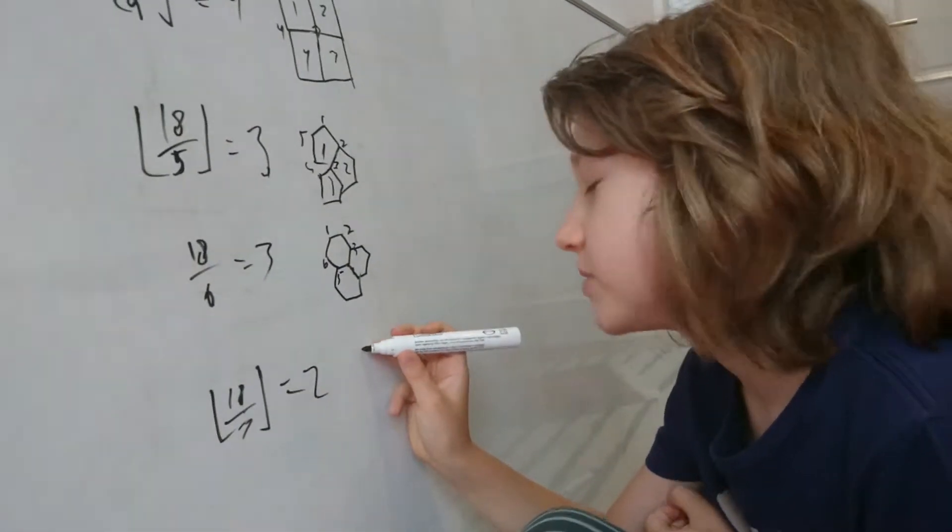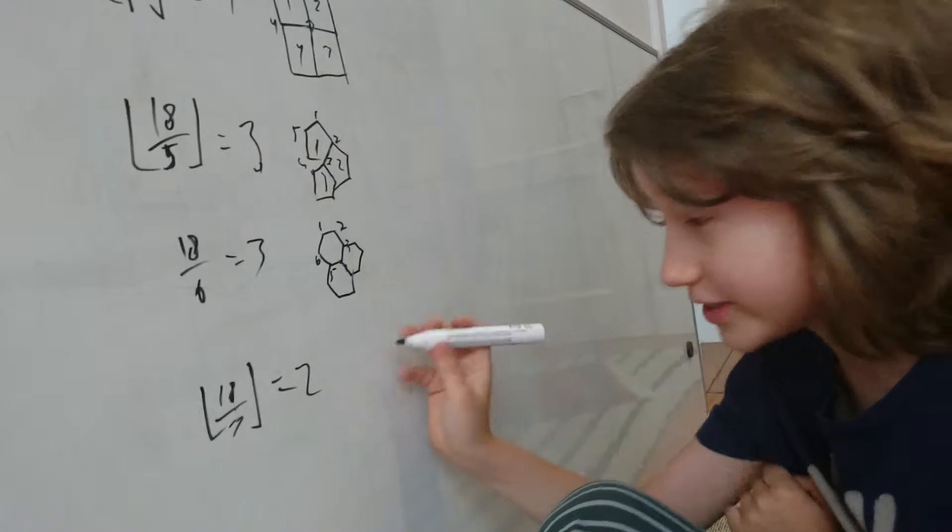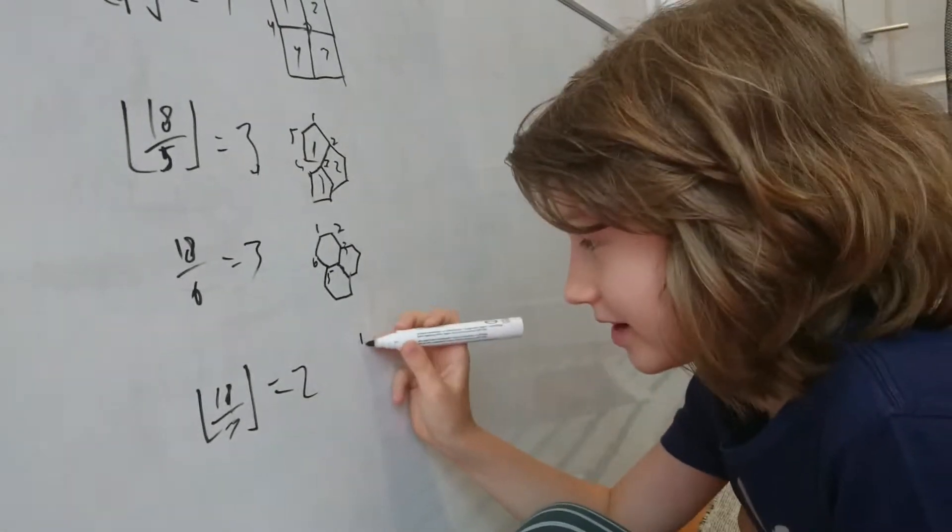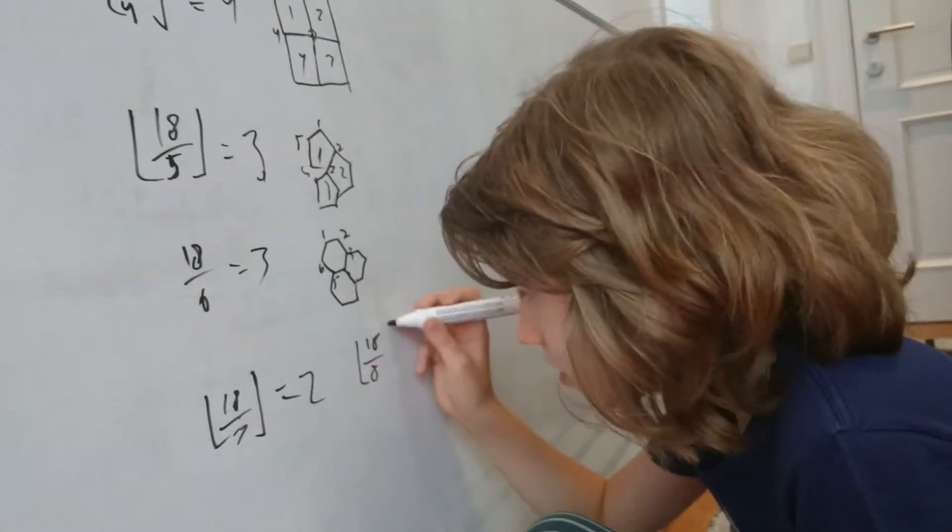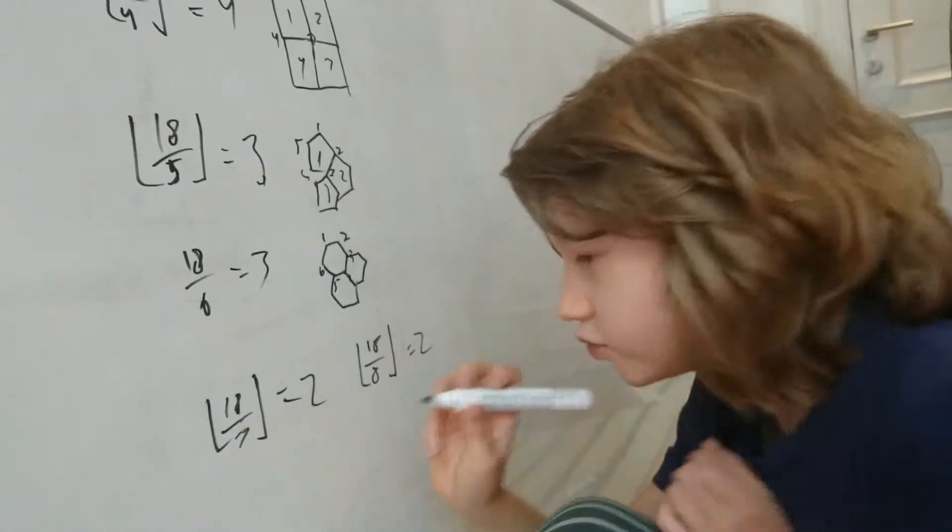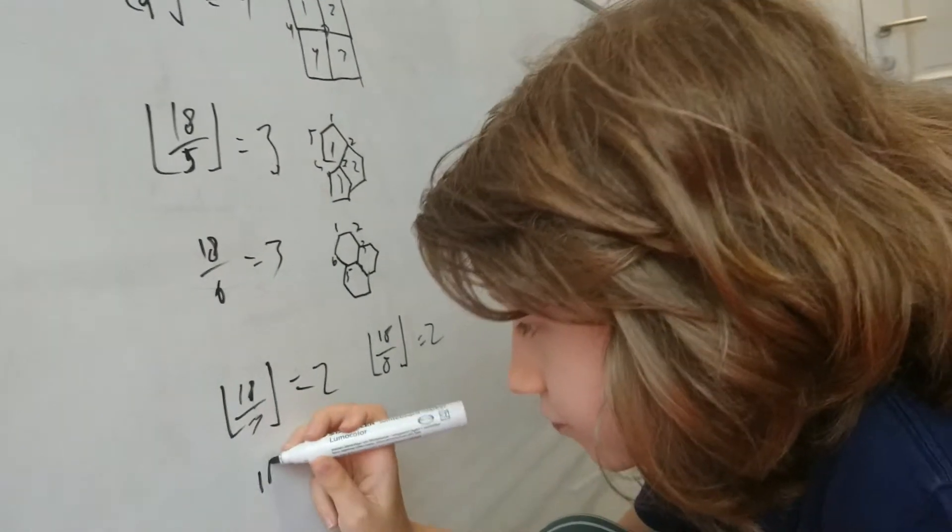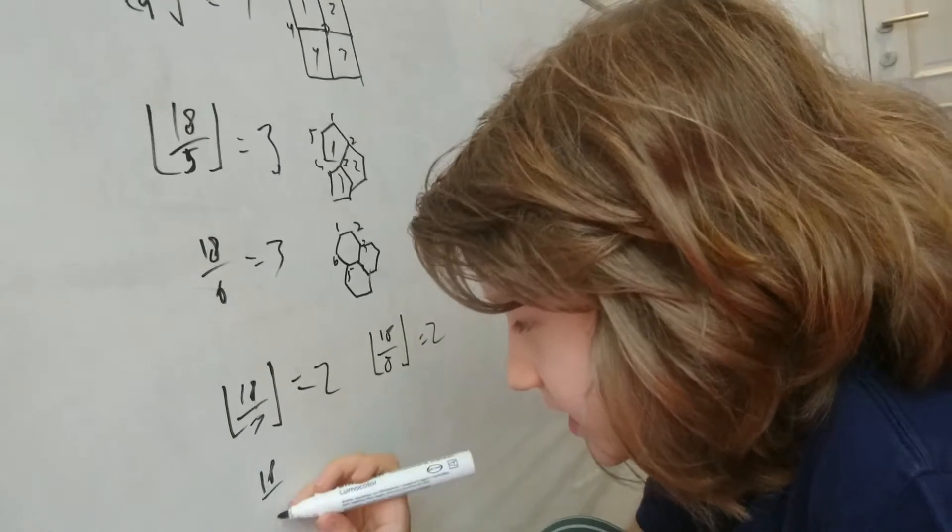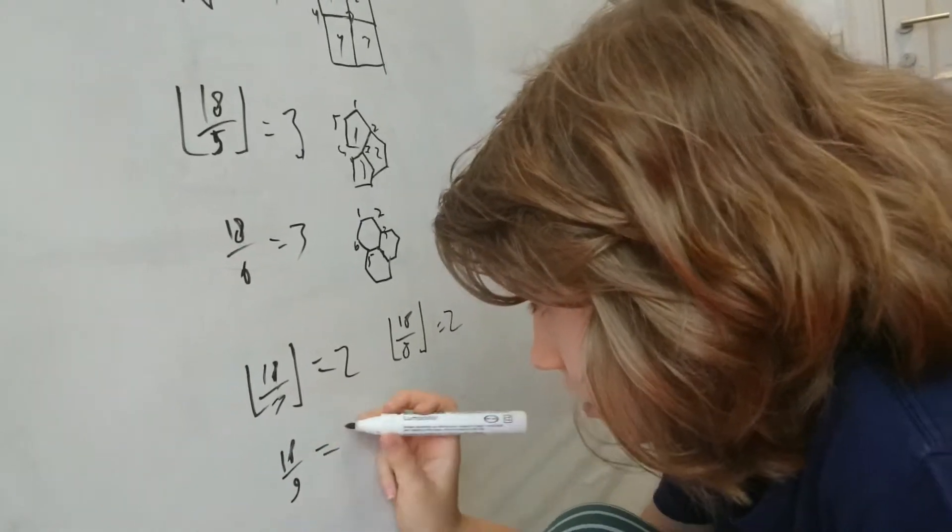But that's how many you have to fit around a point, of course. If we do 18 divided by 8, round it down, it's also going to give us 2.